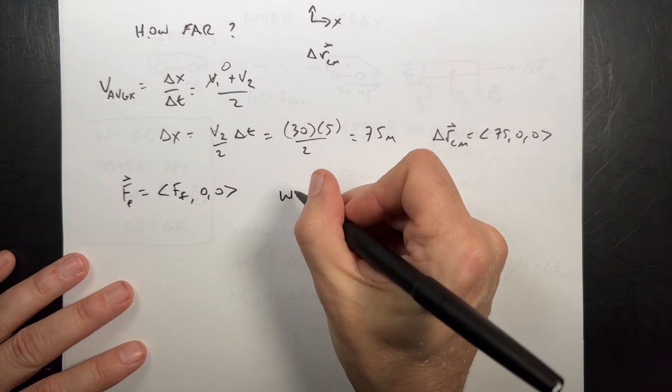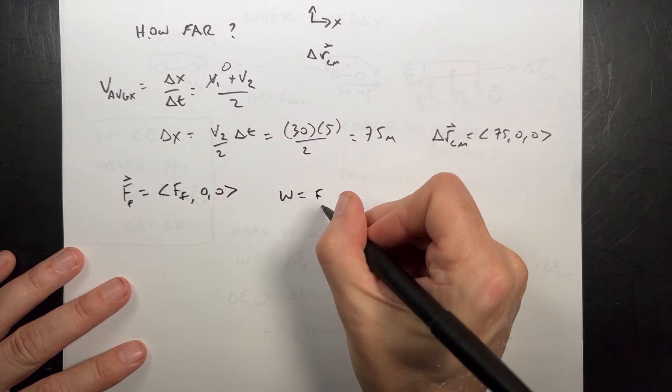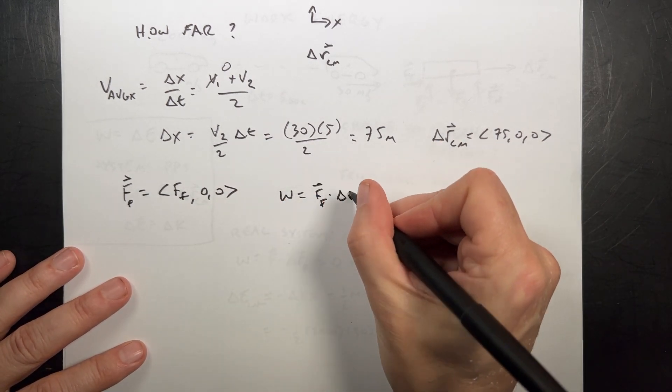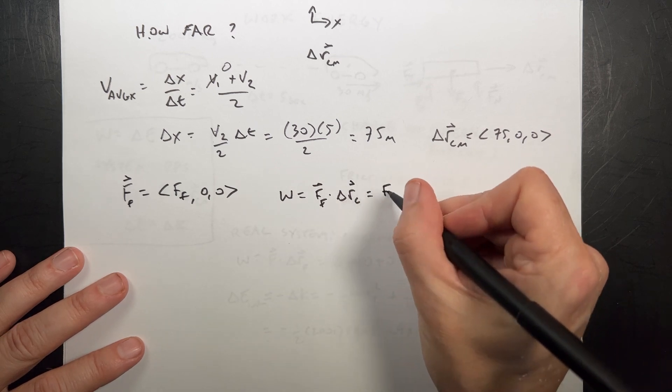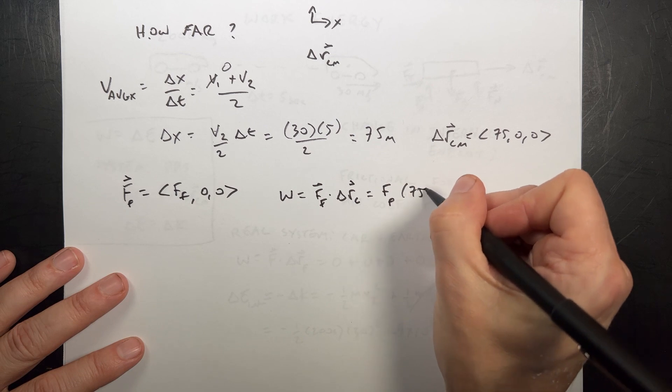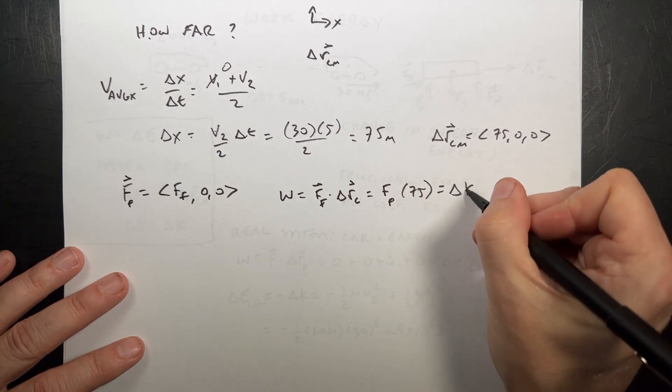So now work equals ff dot delta r center mass. And that's going to be equal to ff times 75. And that's going to be the change in kinetic energy.